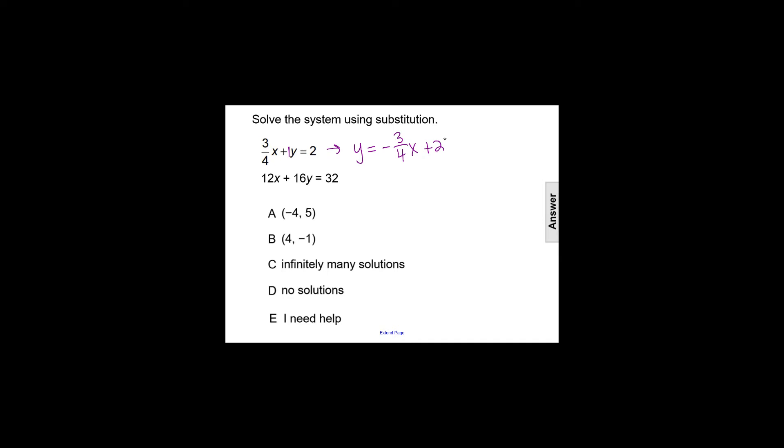We can take negative 3 fourths x plus 2, what y equals, and substitute that in for y in the other equation.